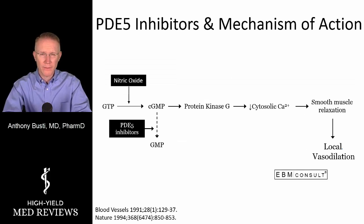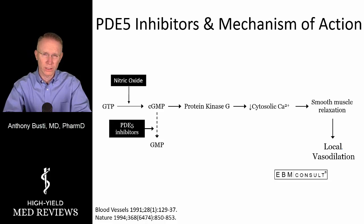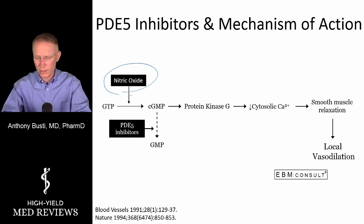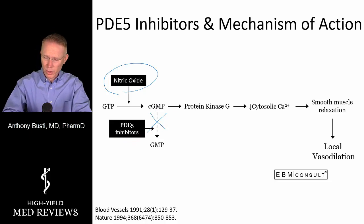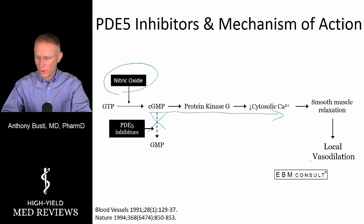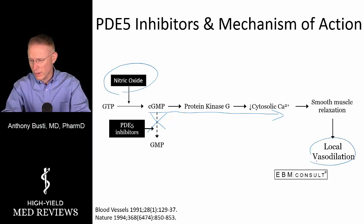When we administer type 5 phosphodiesterase inhibitors for erectile dysfunction, we're trying to achieve local vasodilation in the penis. In the presence of endogenous nitric oxide, PDE5 inhibitors prevent the breakdown of cyclic GMP. On a local level, this drives smooth muscle relaxation in the vessels of the corpus cavernosum, causing local vasodilation that produces the erection.